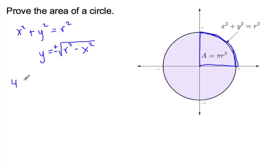So 4, integral, so 4 times the integral from 0 to r, so this is the integral from 0 to the radius r, of, and I'll just do the top side, square root of r squared minus x squared dx.